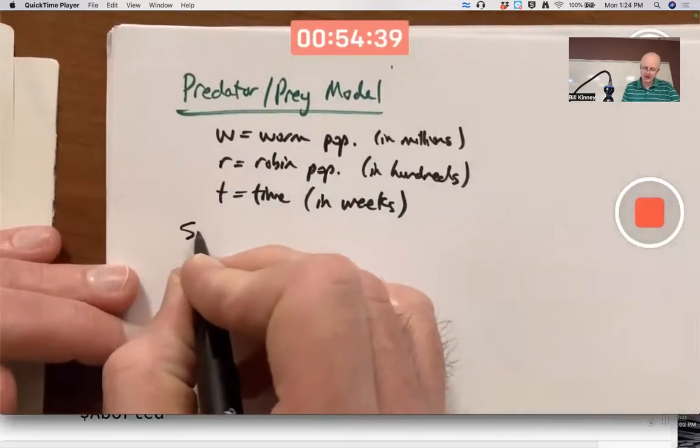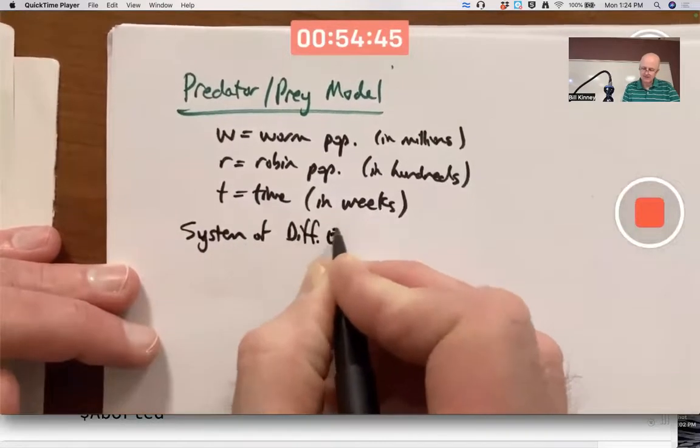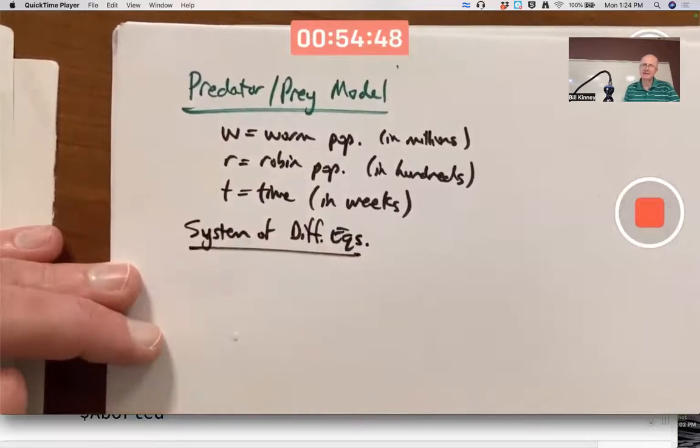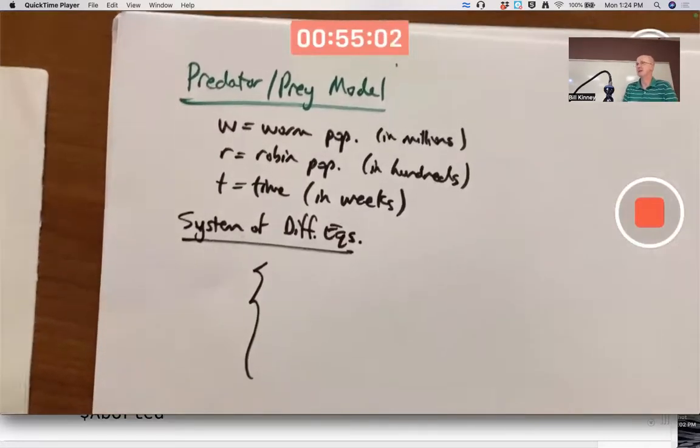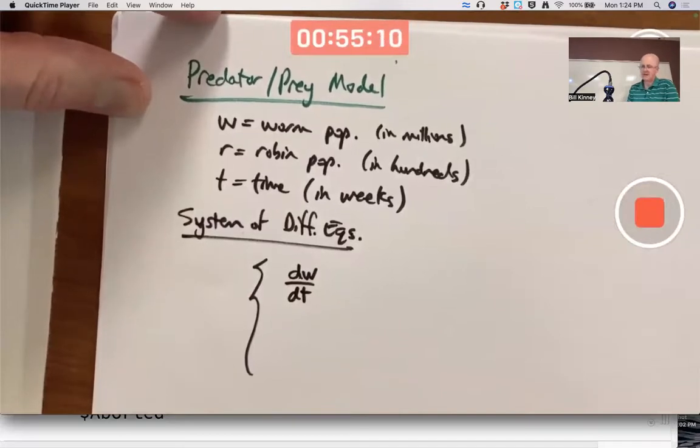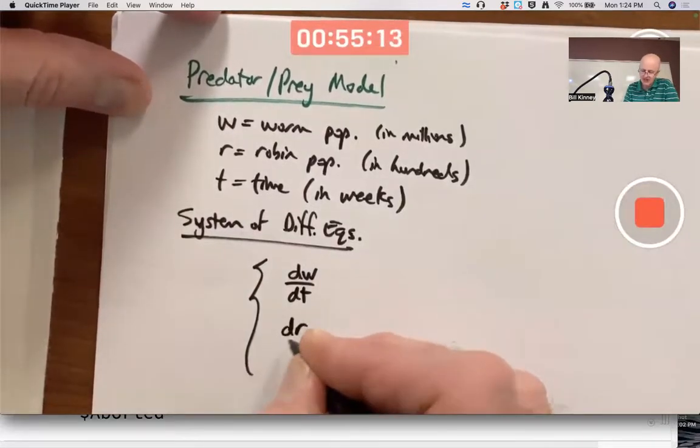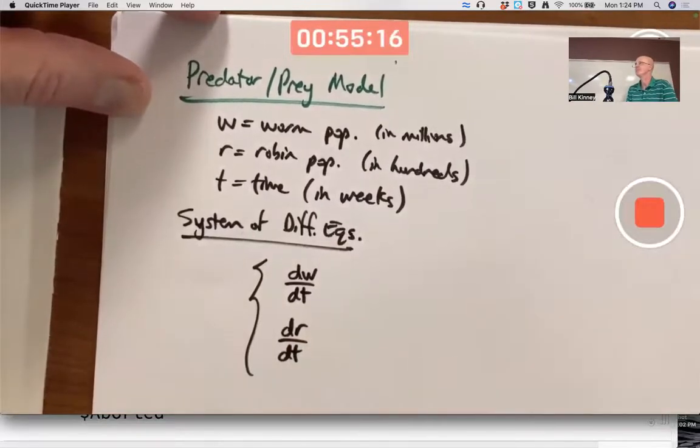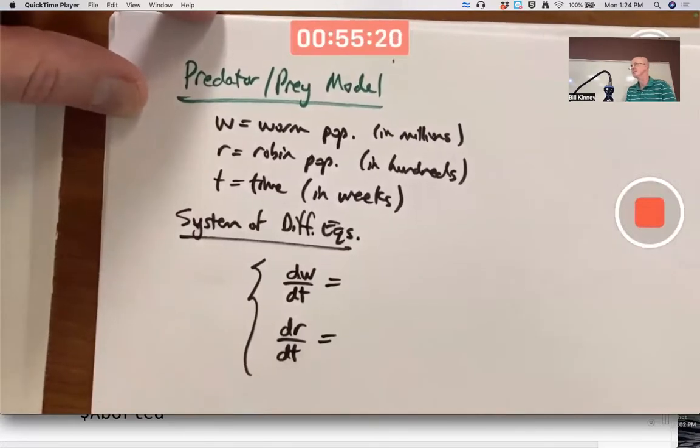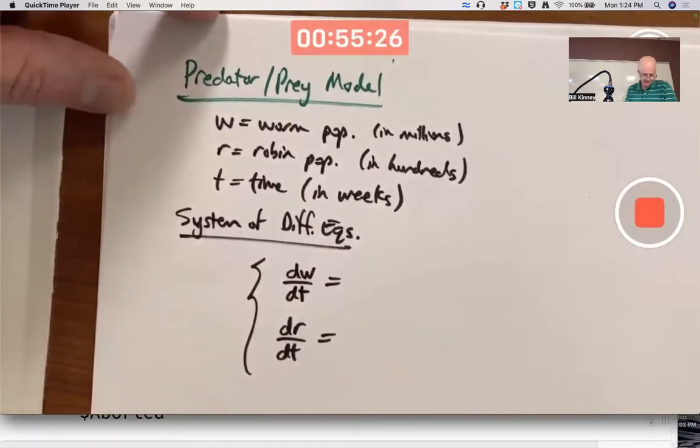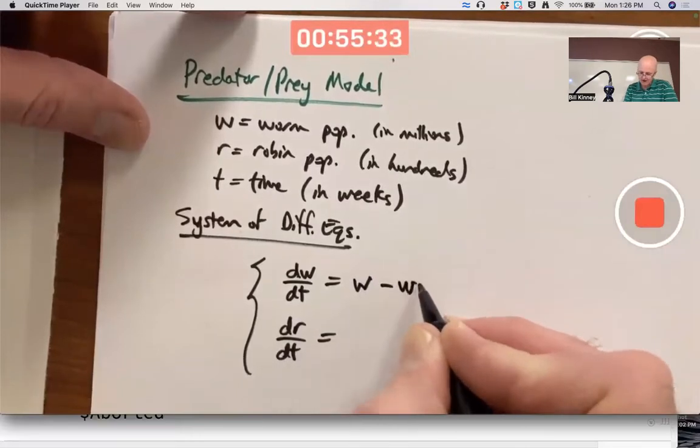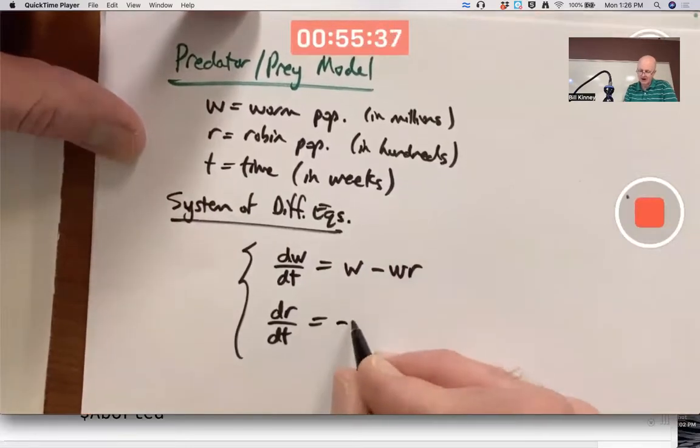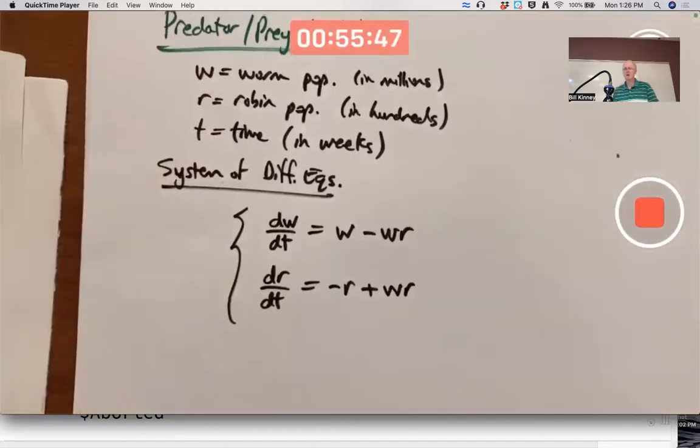Let's write down our system of differential equations that possibly captures the behavior in the simplest way possible. One differential equation for each population. One telling you the rate of change of the worm population with respect to time, and one telling you the rate of change of the robin population with respect to time. To keep things simple, we'll use the example the book does on the bottom of page 661. Let dW/dt be W minus WR, and dR/dt be negative R plus WR.